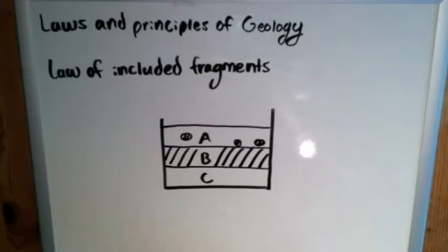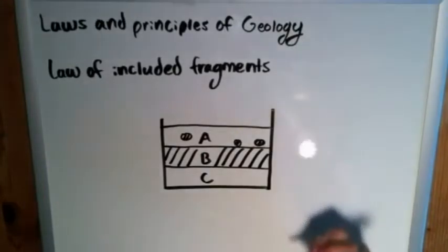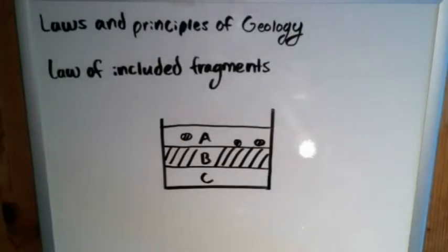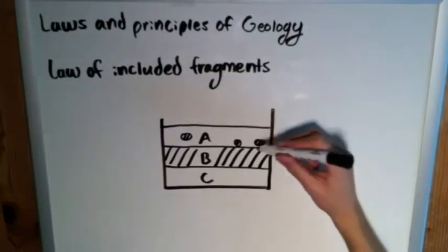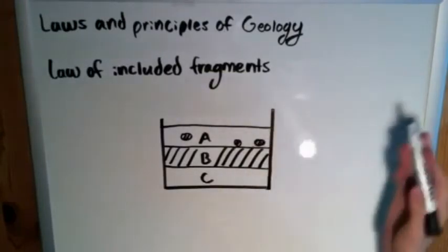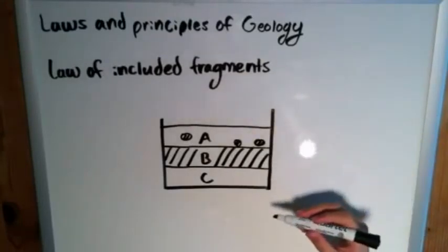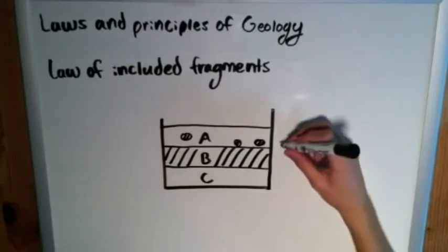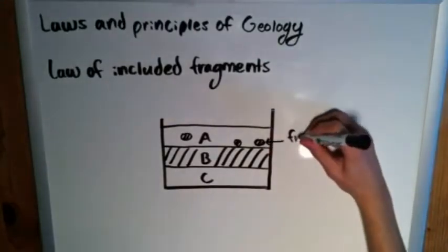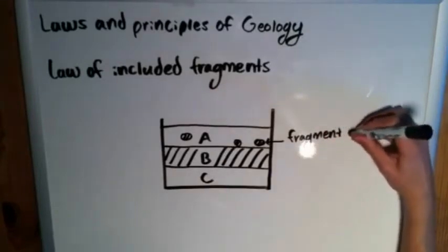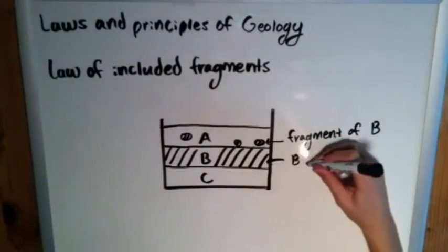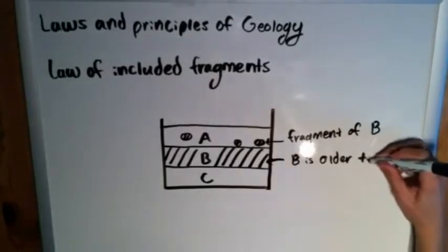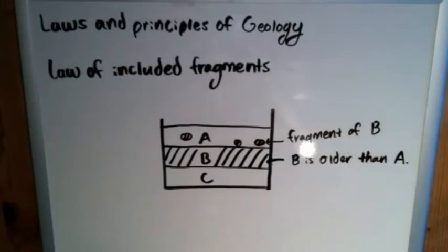But if there had been deformation, faulting or folding that had occurred to this particular region and it looked a lot less neat than this and it wasn't so uniform and that it was just three layers directly on top of each other, then we would see that it would be harder to apply the law of superposition and this would come in handy because we can say if there is any fragment of B within A or any fragment of a certain strata within another strata, then the strata that is contained, its fragments are contained within the other one must be older. So disregarding the law of superposition, pretend we don't know that, we can say well since we see this fragment of B within A, we can say that B is older than A. Simple enough.